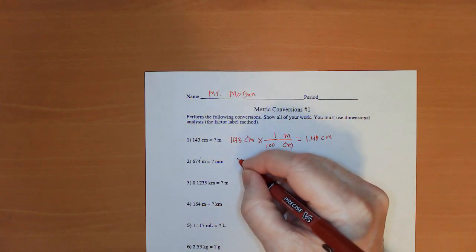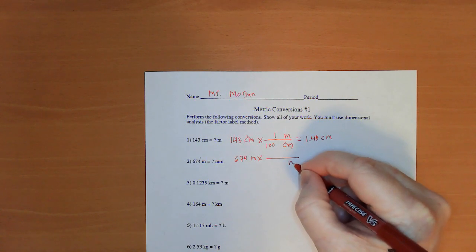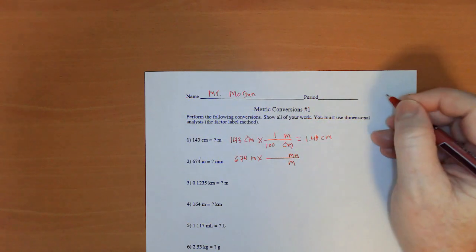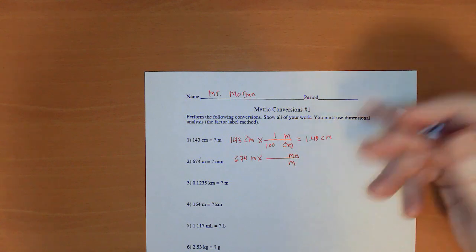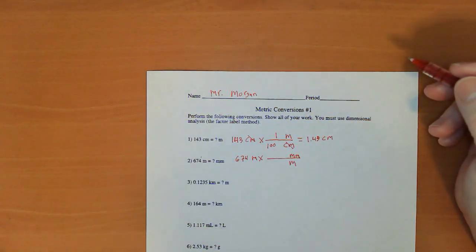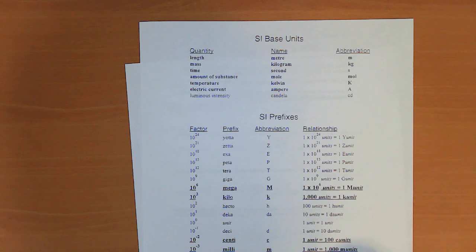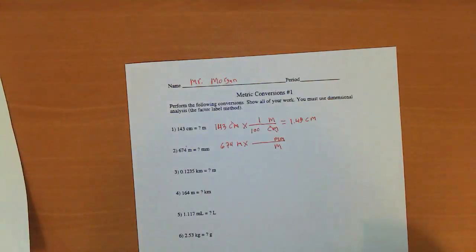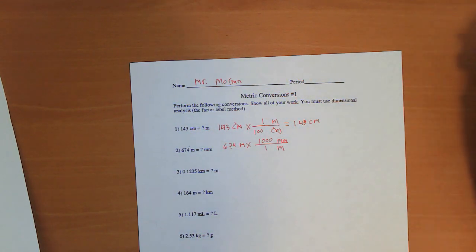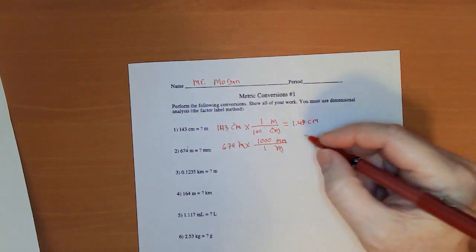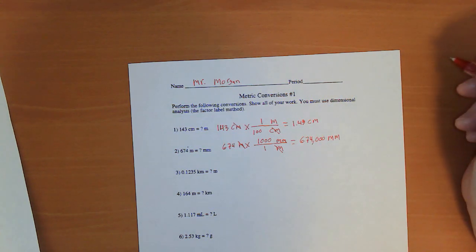Meters to millimeters. 674 meters times. Now we're going to put meters on the bottom because that's what we want to cancel. We're going to put millimeters on the top. Now, the first conversion factor I think we all just know because there's 100 cents in a dollar, 100 pennies in a dollar, 100 centimeters in a meter. Now, if you have to go back here and look, that's fine. Millie is down here. One unit has 1,000 milli-units. So what that means is there are 1,000 millimeters in one meter. So meter cancels meter. And this is 674,000 millimeters.